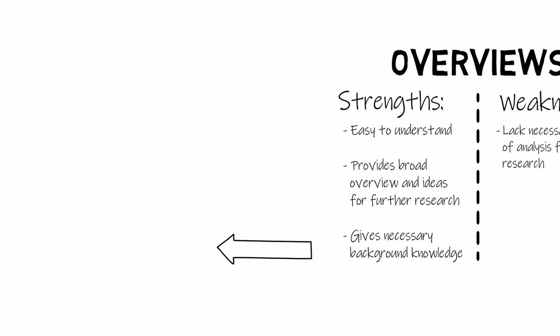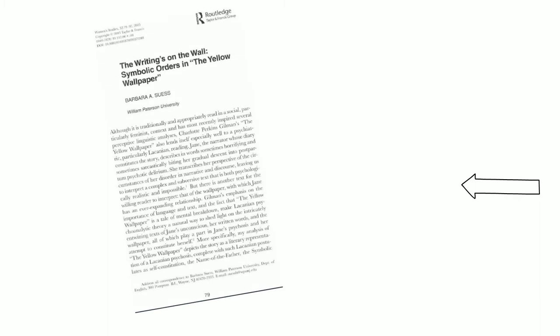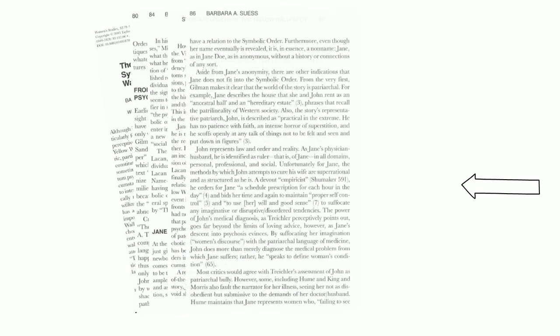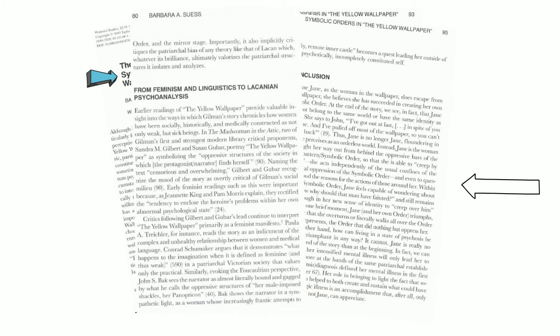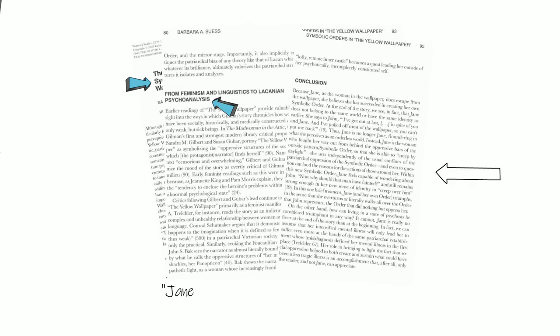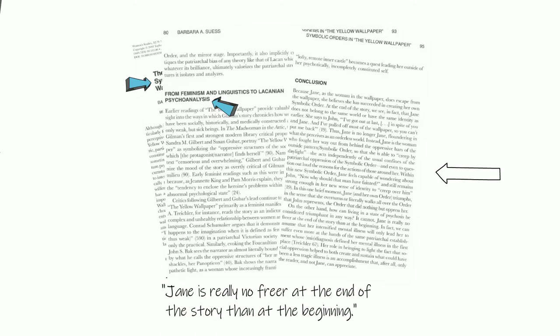Literary criticism offers that depth. The detailed focus on one aspect or interpretation of a story separates critical articles from overviews. This entire article is about a single specific topic within the story, The Yellow Wallpaper, as a symbolic order. Another distinguishing factor is the use of a critical lens — an established way to view and therefore interpret a work. In this case, the author applies Lacanian psychoanalysis and the aspect of symbolic order to the story to support her interpretation that Jane is really no freer at the end of the story than at the beginning. What's a symbolic order? I don't know either.